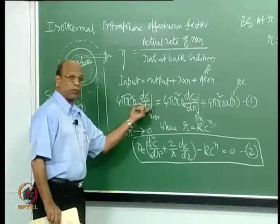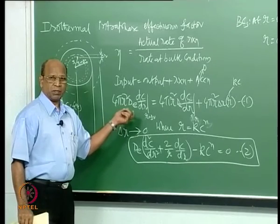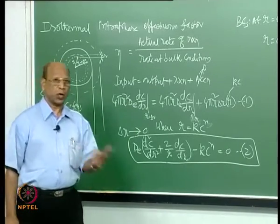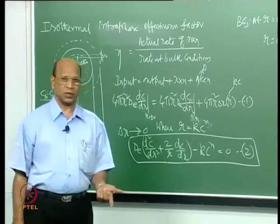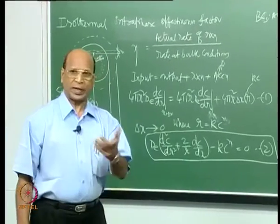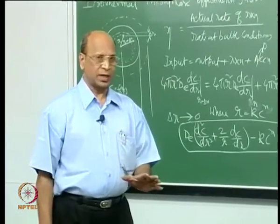An important point about units: in this heterogeneous system, what should be the dimensions of k? When I write the balance, here we have flux times area, giving moles per second. Substituting carefully, what should the units of k be?